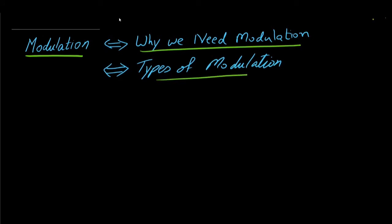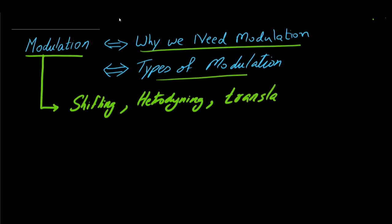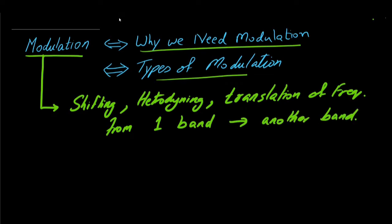Modulation is simply shifting, heterodyning, or translation of frequency from one band to another band. So basically we shift the frequency from one band to another band. The question is, why do we do it? What is the rationale of this translation?